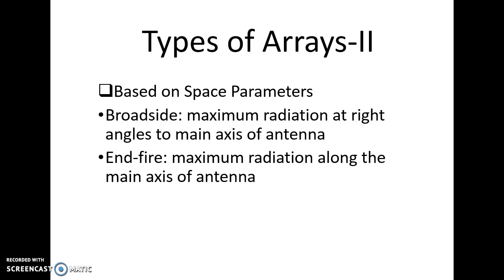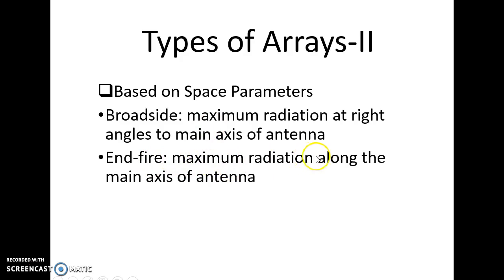Coming to the second classification, we can classify arrays depending on space parameters. Earlier, distance between elements and excitation were considered physical parameters; space parameters refer to the radiation — whatever parameters we measure for antenna performance in space. Depending on space parameters, we can define the broadside array and the end-fire array. The broadside array has its radiation maximum at right angles to the main axis of the antenna, whereas in the end-fire array the maximum radiation is along the axis.